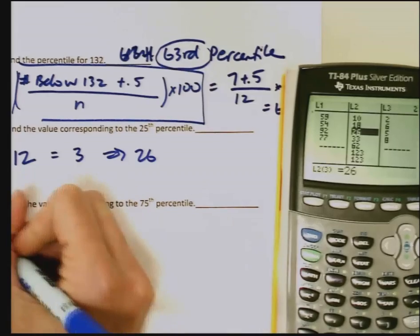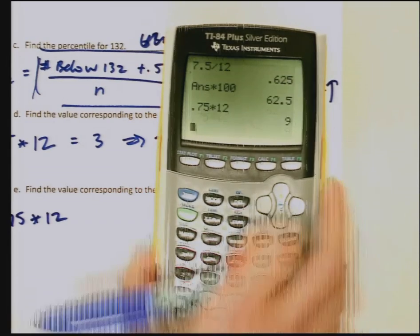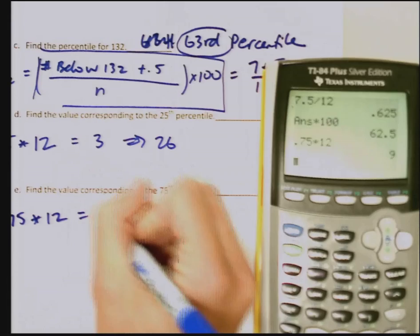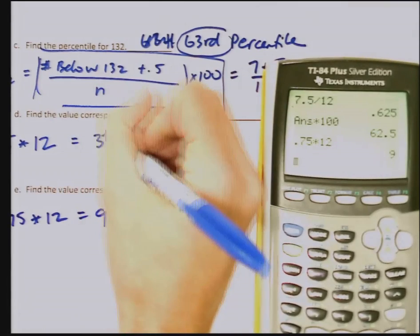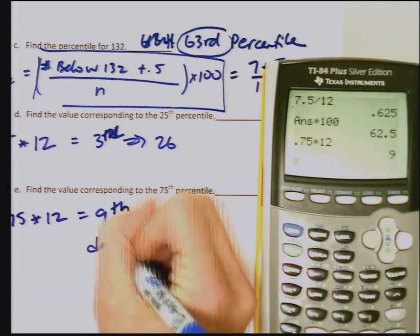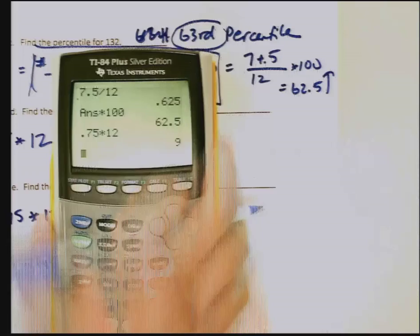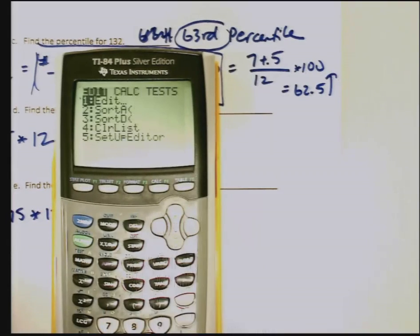The next one is the 75th percentile. So I take 0.75 times 12. So I'll go 0.75 times 12, and I end up with 9. So I want the ninth data value in order.